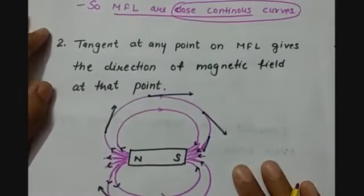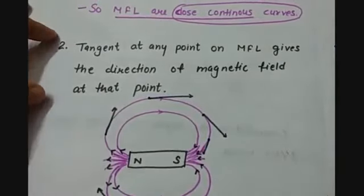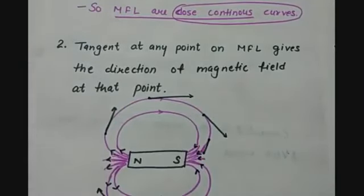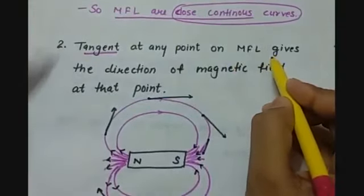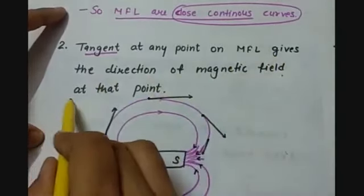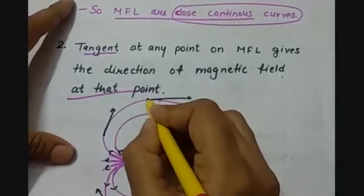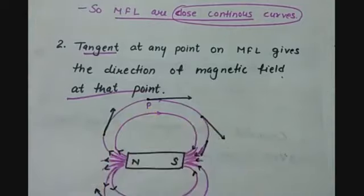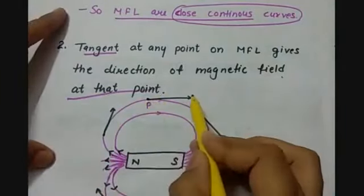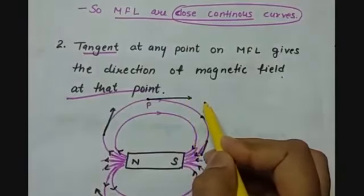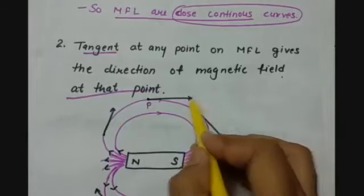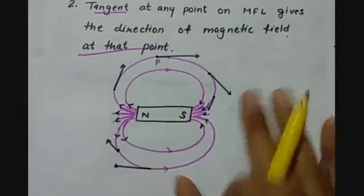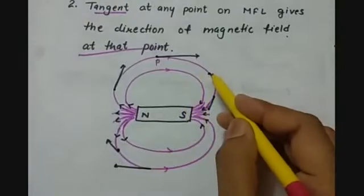The second important property of magnetic field lines is that they give the direction of the magnetic field. When we draw a tangent at any point on a magnetic field line, that tangent gives us the direction of the magnetic field at that point. For example, at point P, we draw a tangent and it gives the direction of the force. Magnetic field is a vector quantity — it has both magnitude and direction. This way you can find the direction of the magnetic field at any point.